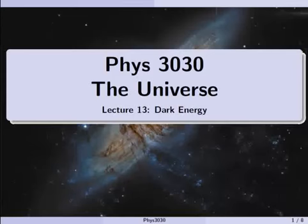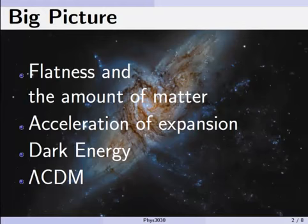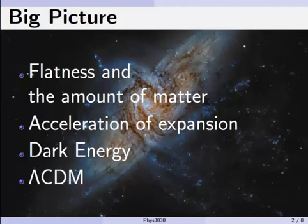Physics 3030, the universe. This is lecture 13 in the series, and today we're going to talk about dark energy. We'll talk about flatness in the sense of the curvature of the universe and the amount of matter in the universe, how those things are correlated. We'll talk about the expansion of the universe and how measurements in the late 90s showed us that the expansion first found by Hubble is actually accelerating. Then we'll talk about why we think this is caused by something called dark energy, though we don't really know what dark energy is. And then we'll talk about something called the Lambda CDM model of cosmology.